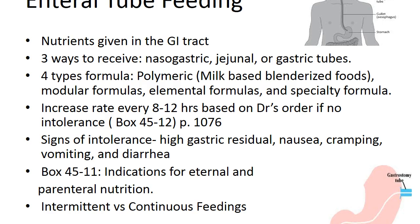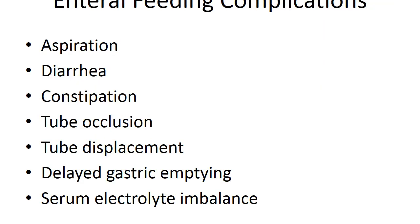With all tube feedings, start at full strength but at a low rate; the hourly rate is increased every 8 to 12 hours per order if there are no signs of intolerance. Monitor patients for aspiration. Feedings can be given as bolus or intermittent (at intervals throughout the day) or as continuous tube feedings via a feeding pump over 24 hours. Complications of internal tube feedings include aspiration, diarrhea, constipation, tube occlusion, tube displacement, delayed gastric emptying, and serum electrolyte imbalances.